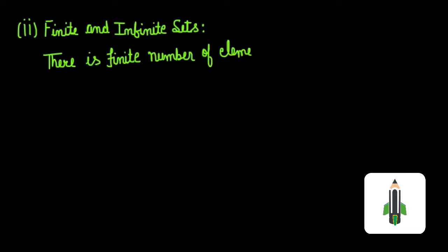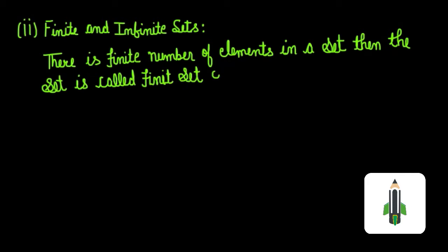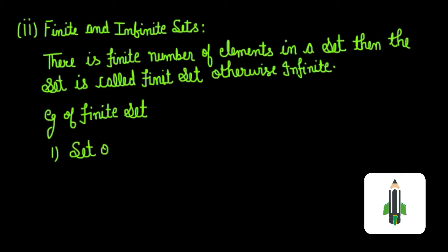In this video, we are going to learn about finite and infinite sets. If there are a finite number of elements in a set, then the set is called a finite set, otherwise infinite. An example of a finite set is the set of vowels in the English alphabet.